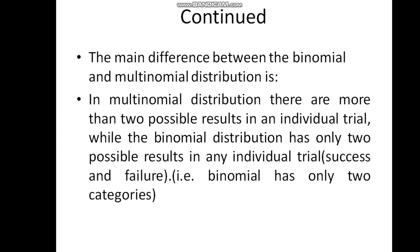This is the main difference between the binomial and multinomial distribution. In multinomial distribution there are more than two possible results in an individual trial, while the binomial distribution has only two possible results in any individual trial, which is success and failure. Then the binomial has only two categories.